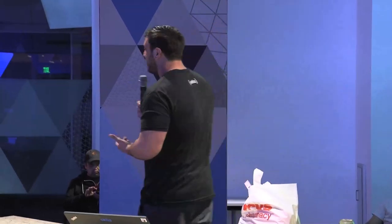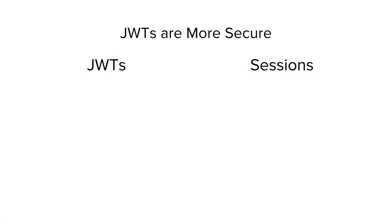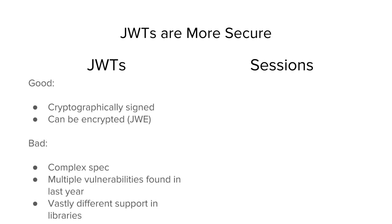The next myth is that people think JWTs are more secure — this is the big one. On the good side, JWTs are cryptographically signed, which is really useful because it allows you to trust a JSON Web Token. They can also be encrypted using a spec called JWE. But almost nobody does this — it's actually extremely complicated to do properly.